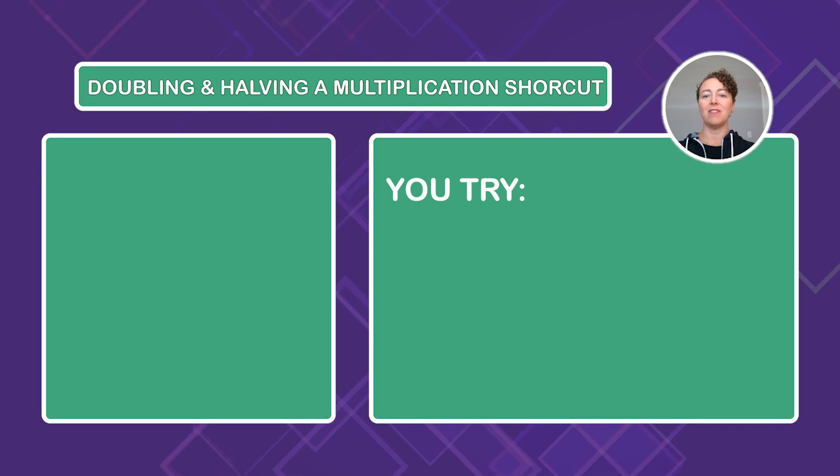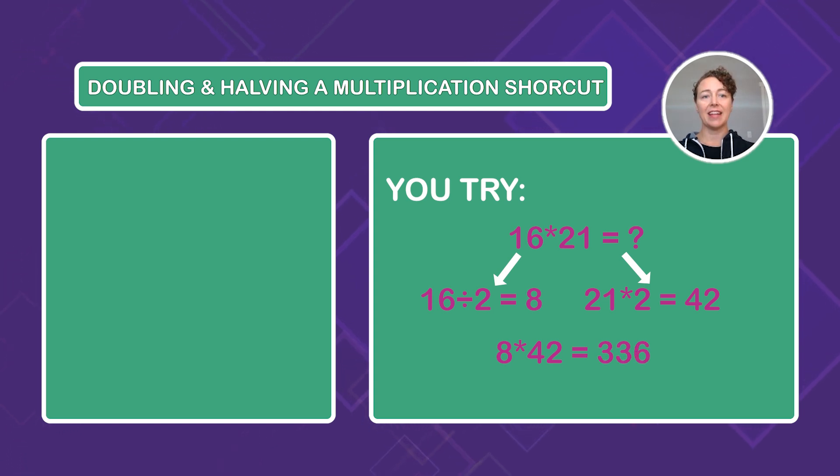Now, here's a challenge for you. Pause the video and see if you can work out 16 times 21 using the doubling and halving technique. All right, if you halved 16, you got 8. And if you doubled 21, you got 42. So now you just have to calculate 8 times 42 and that equals 336. If that's the answer you got, nicely done. If not, go back and carefully check your arithmetic steps and I bet you'll figure out what went wrong. Next up, we have an awesome squaring shortcut.